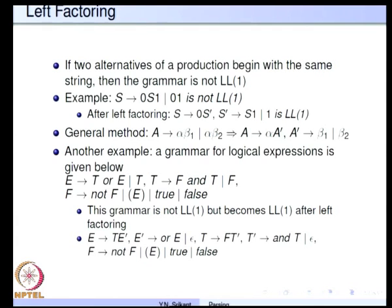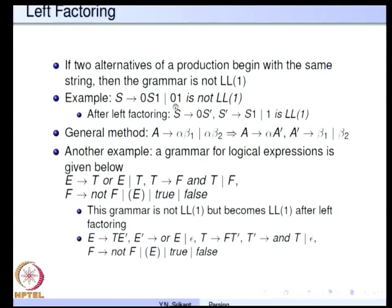That was about left recursion elimination. Left factoring is the other transformation. If there are two alternatives beginning with the same string, the grammar is not LL1. For example, S going to 0 S 1 or 0 S 1 or 0 1 is definitely not LL1. The idea behind left factoring is to remove the common portion of the alternatives and have a separate non-terminal for the rest.